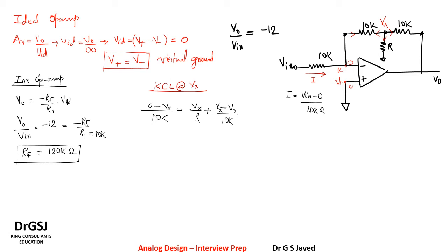Coming back, we have, let us isolate the V_x values. So V_x divided by 1 by 10k plus 1 over R plus 1 over 10k is equal to V naught over 10k. Simplifying, V_x is equal to 1 plus R times 1 by 5k equal to V naught by 10k. This is equation 1.